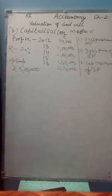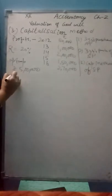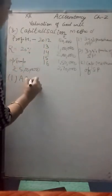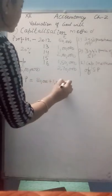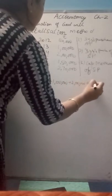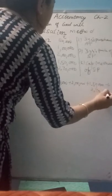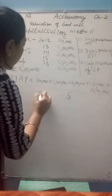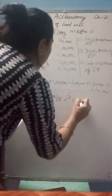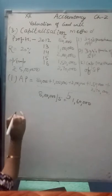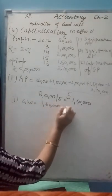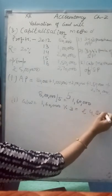AP is not directly given. Calculate AP as sum of profits upon number of years: 80,000 plus 1 lakh plus 2 lakhs plus 1,50,000 plus 2,70,000 divided by 5 = 8 lakhs divided by 5 = 1 lakh 60,000. First requirement goodwill = AP into 3 years purchase = 1,60,000 into 3 = 4 lakh 80,000.